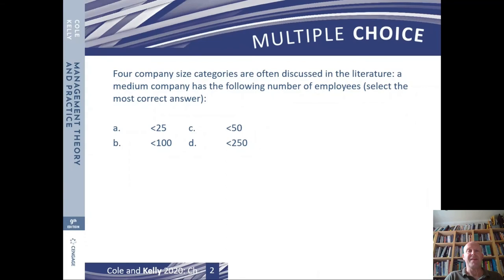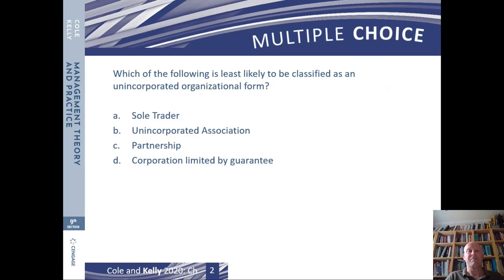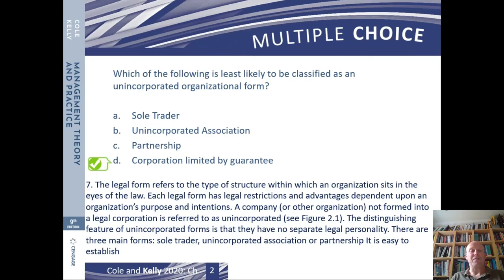Having read the chapter, you should be well placed to answer some of the multiple choice questions. The correct answer to that question is D — less than 250 for a medium organisation. We said 250 and above is the large organisation category — you can go and have a look at paragraph 19 if you want to refresh your memory. We did also talk about the difference between incorporated and unincorporated, and about corporations limited by guarantee — read a bit more about that if you didn't get it right.